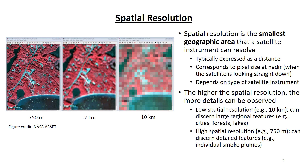Low spatial resolution — for example, 10 kilometers — means only large regional features can be resolved, such as cities, forests, and lakes. High spatial resolution — for example, 750 meters — means more detailed features can be resolved, such as individual smoke plumes from wildfires.